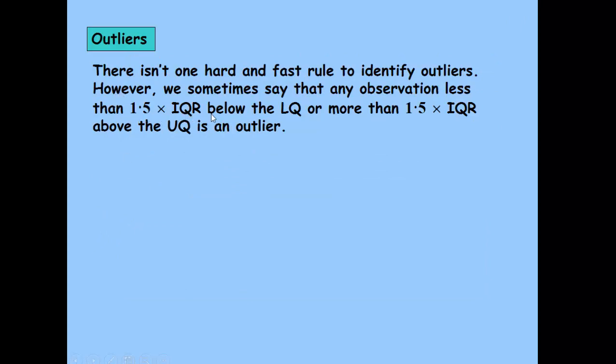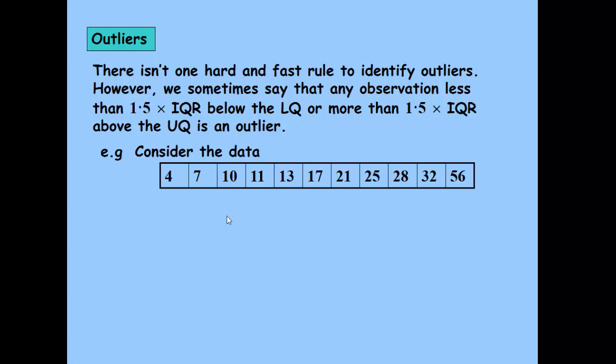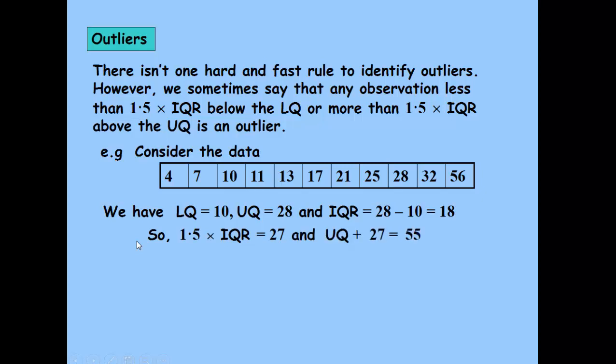So one and a half times the interquartile range below the lower quartile or more than one and a half times the interquartile range above the upper quartile is an outlier. And from that point on, either that point or that point, we would break the line to indicate outliers from there on. So this example here, anything above 55 would be considered to be an outlier. So 56 would be an outlier, our maximum value. Only just, but it would technically.